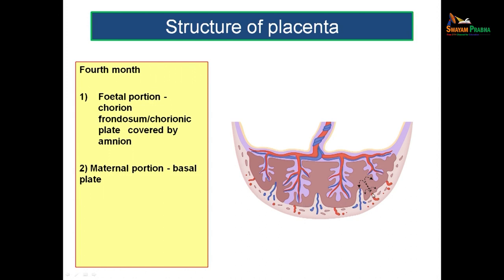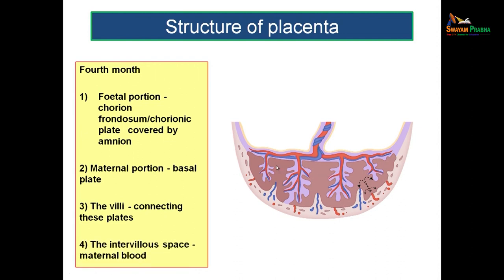The maternal portion of the placenta is known as the basal plate. You have the chorionic plate on the fetal side and the basal plate on the maternal side. Between these two plates, you can see many projections called villi. The villi connect the chorionic plate with the basal plate; fetal capillaries traverse through the villi, exchanging materials with the maternal blood in the intervillus spaces.